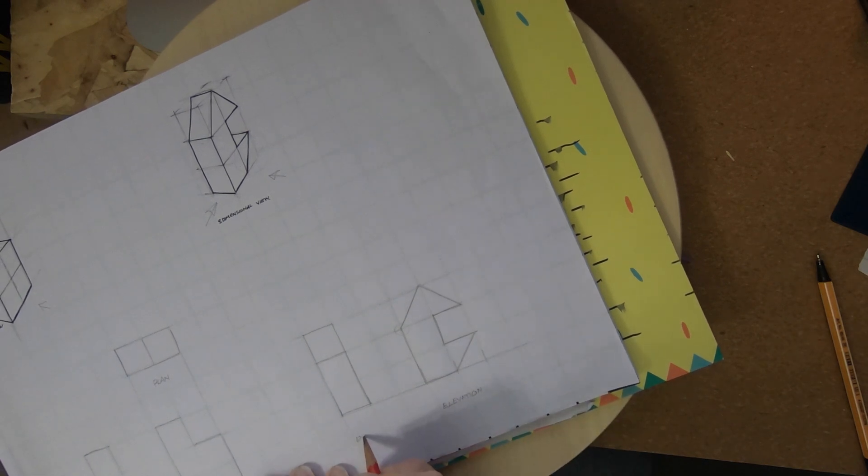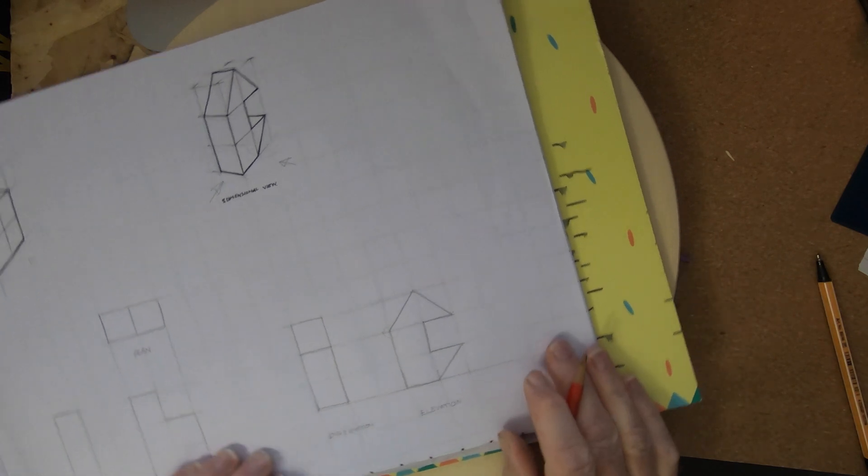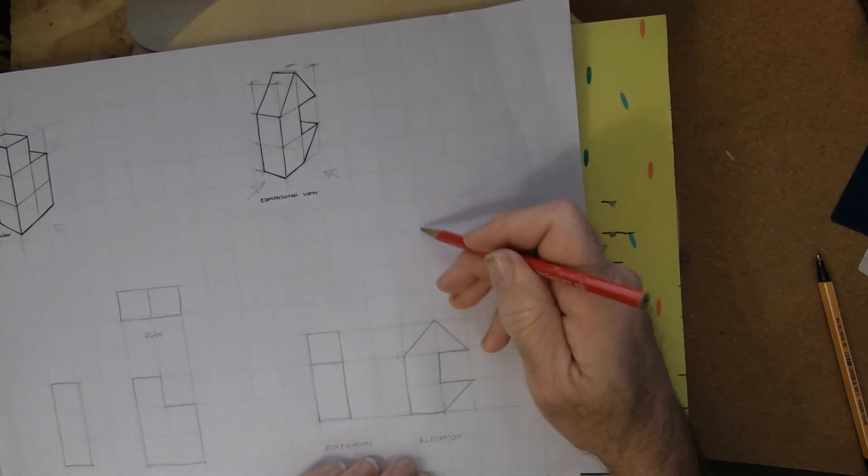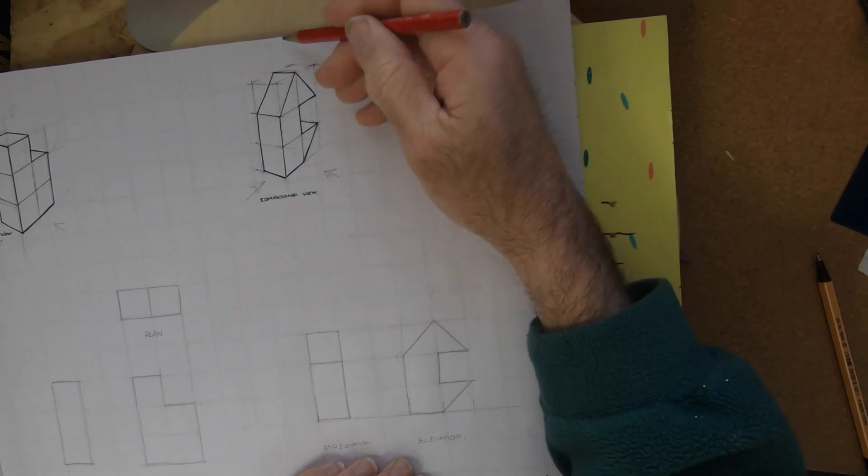Had we lines to show detail that's hidden, and we will introduce those later on, we may have something else to add to that end view because there's something hidden around the back there that might make it a little bit clearer to understand. So what we've got left is the top view.